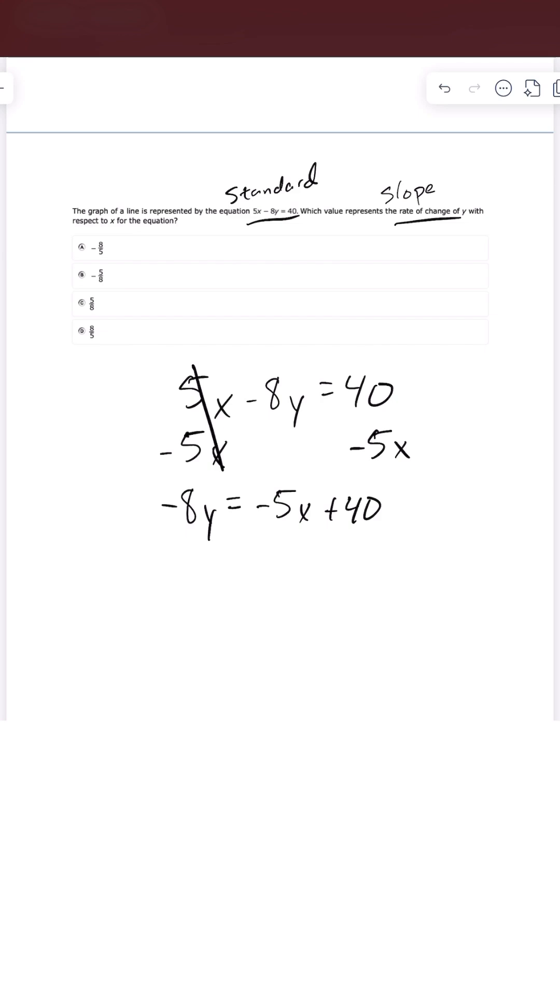And so you could write that as 40 minus 5x. You would get the same thing. But I just prefer to have my x term and my slope before my y intercept.